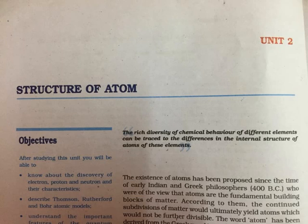These earlier ideas were mere speculation and there was no way to test them experimentally. These ideas remained dormant for a very long time and were revived again by scientists in the 19th century. The atomic theory of matter was first proposed on a firm scientific basis by John Dalton, a British school teacher in 1808. His theory, called Dalton's Atomic Theory, regarded the atom as the ultimate particle of matter.